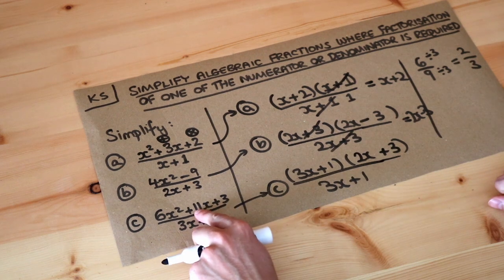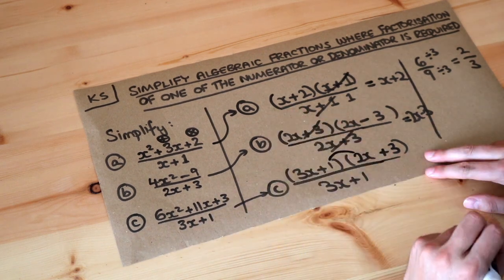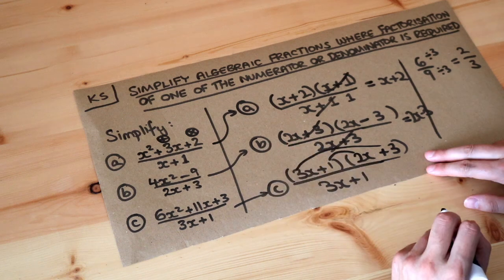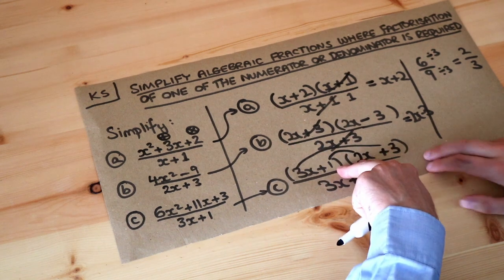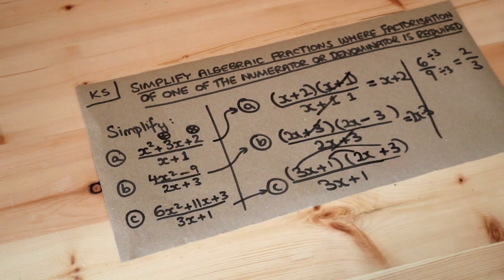So we also need the x terms. Well, we're going to have 2x times 1, which is 2x, and 3 times 3x, which is 9x. 2x plus 9x is 11x. That works.